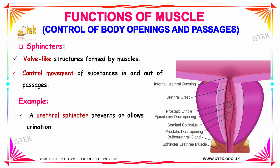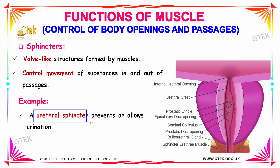How do muscles help to control body openings and passages? Muscles like your sphincters are ring-like structures that control the movement of substances in and out of the passages. For example, your urethral sphincter prevents or allows urination. You can see the urethral sphincter muscle here, which controls the movement of substances in and out of the passage.